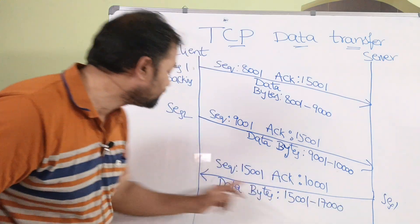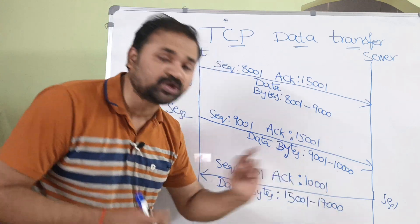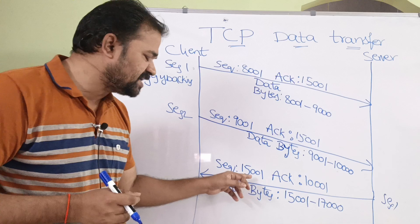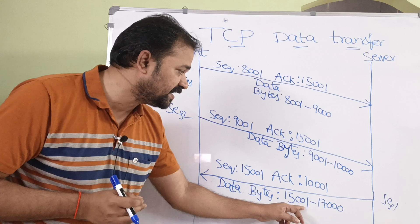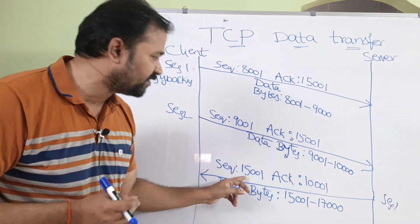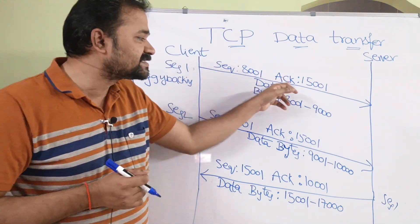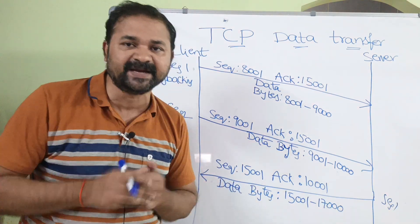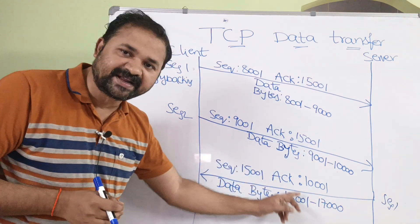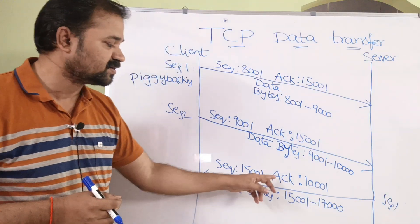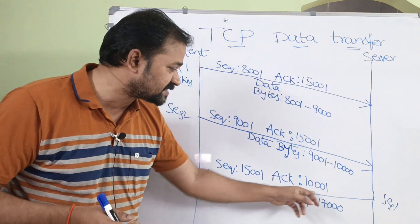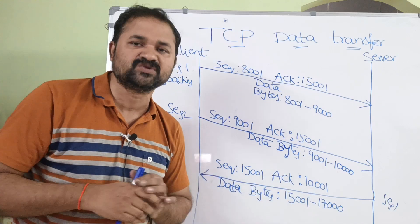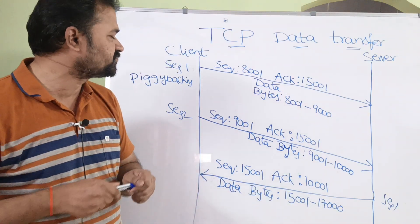The server is sending a segment to the client where the data totally contains 2000 bytes, with the first byte at 15001 and the last byte at 17000. The sequence number is 15001 — the first byte of the data. Along with this data, the server provides an acknowledgement of 10001, specifying that the server expects the next segment from the client to start at byte 10001. In this way, data is transferred between client and server, confirming full duplex communication.